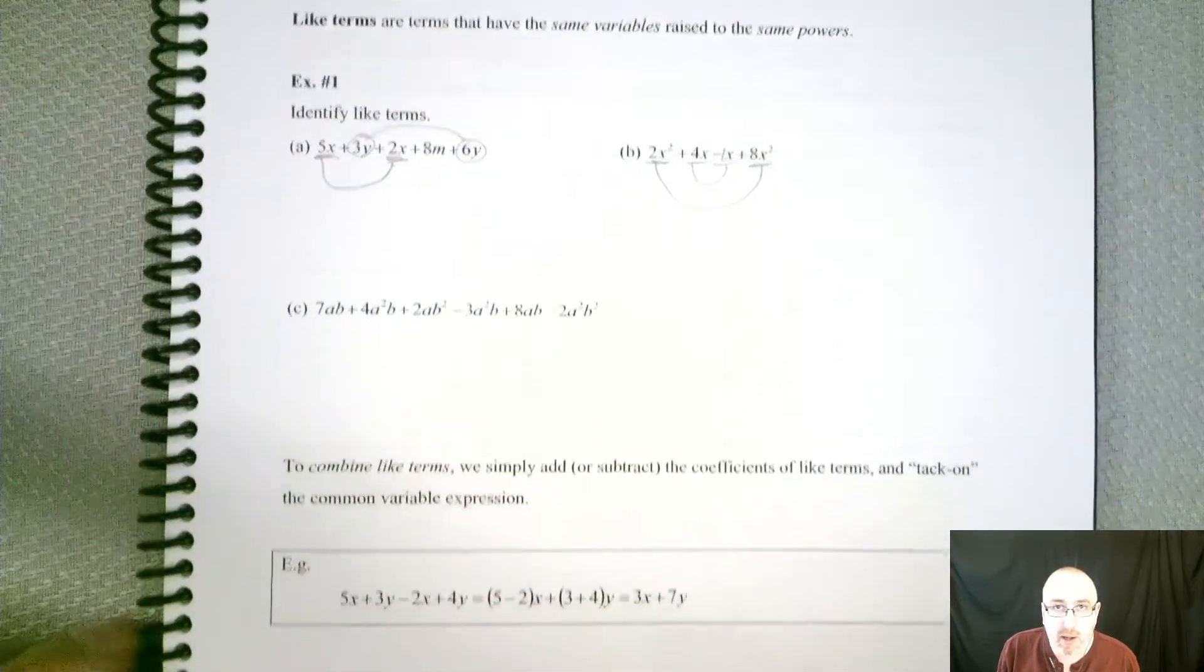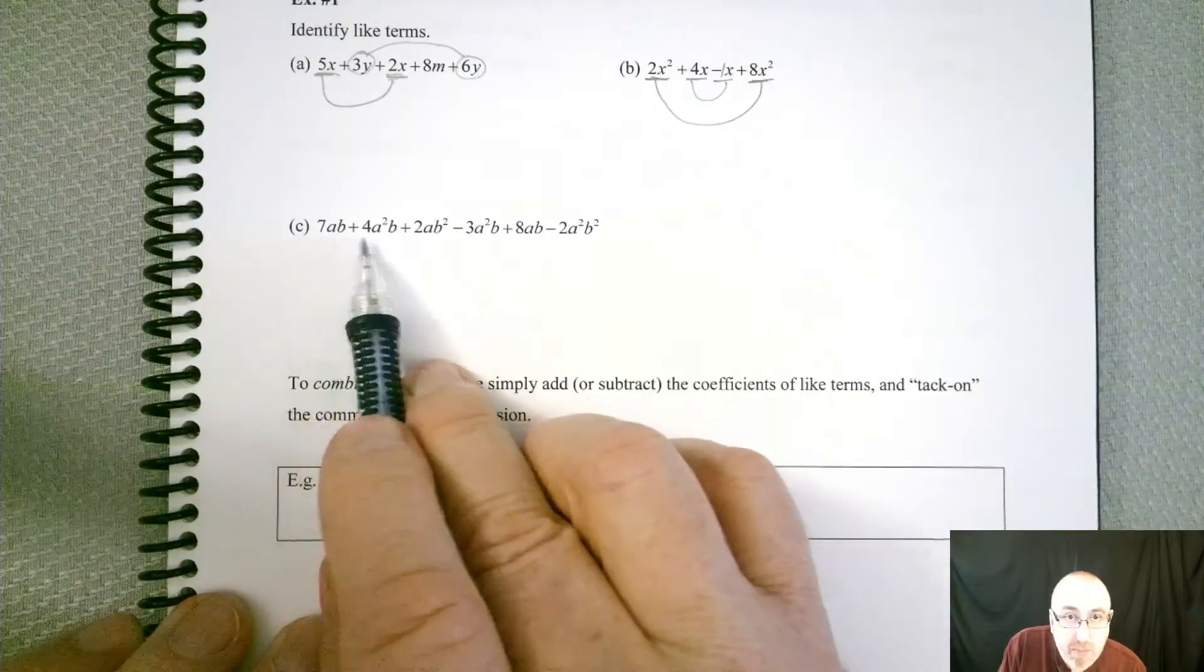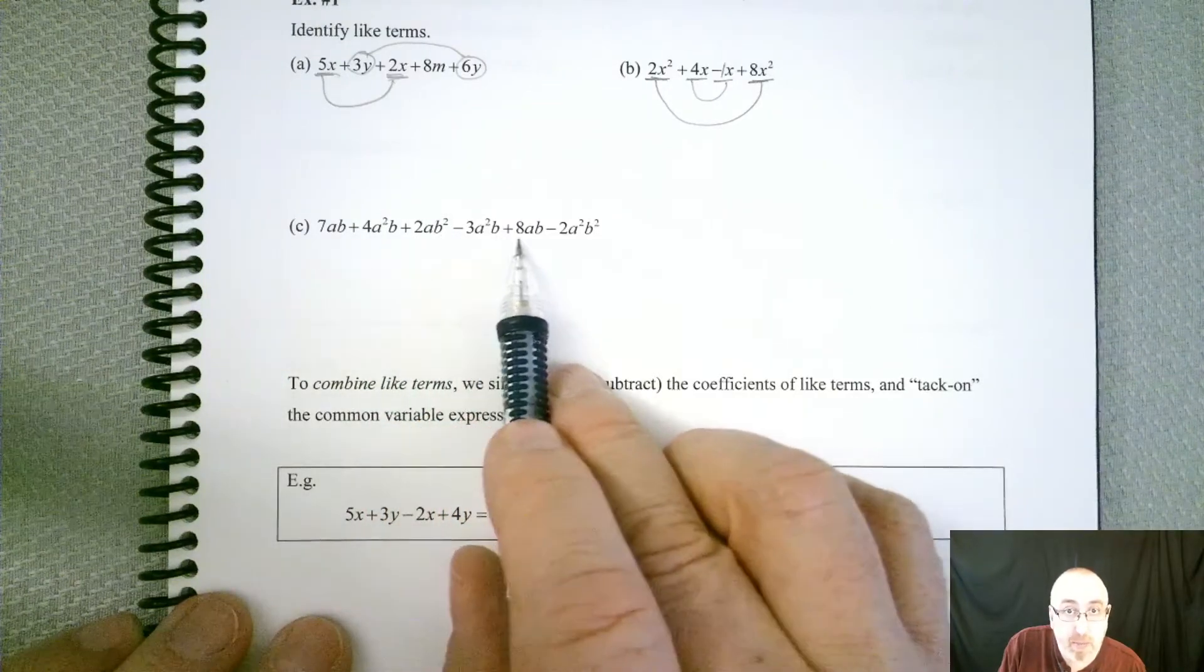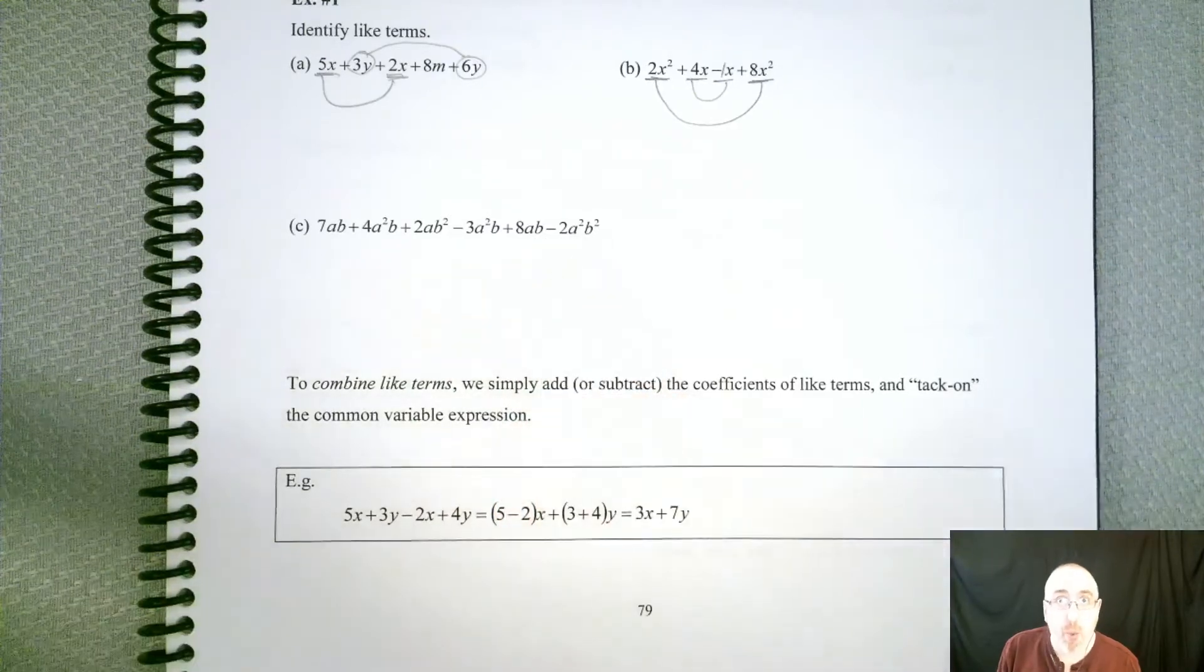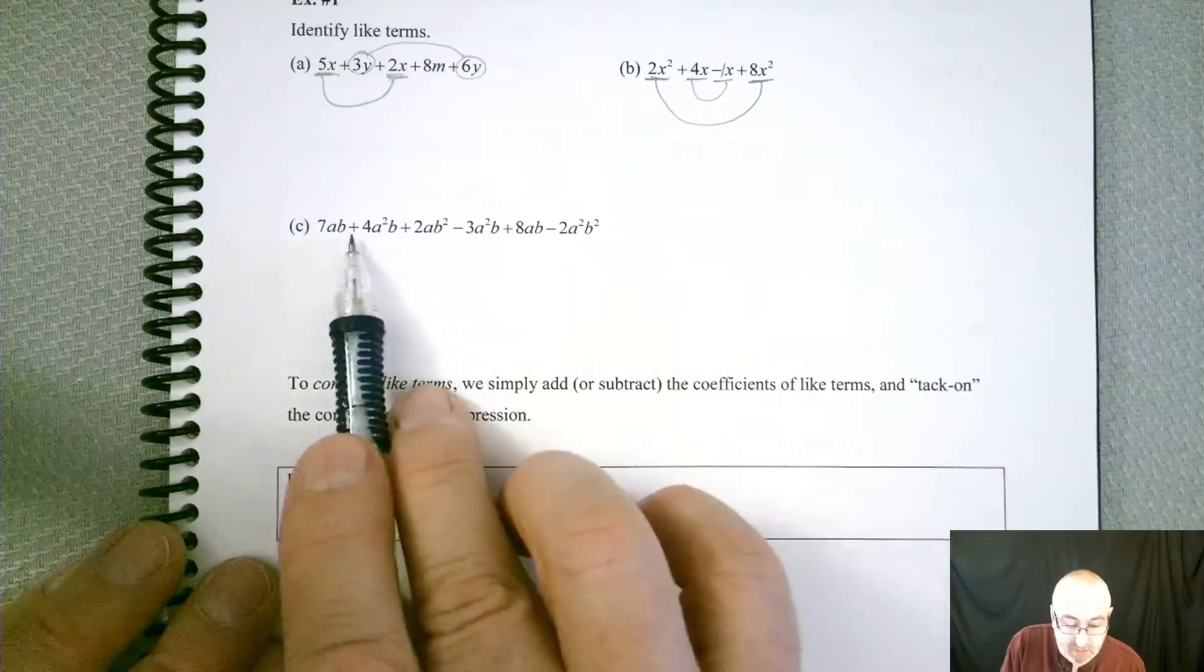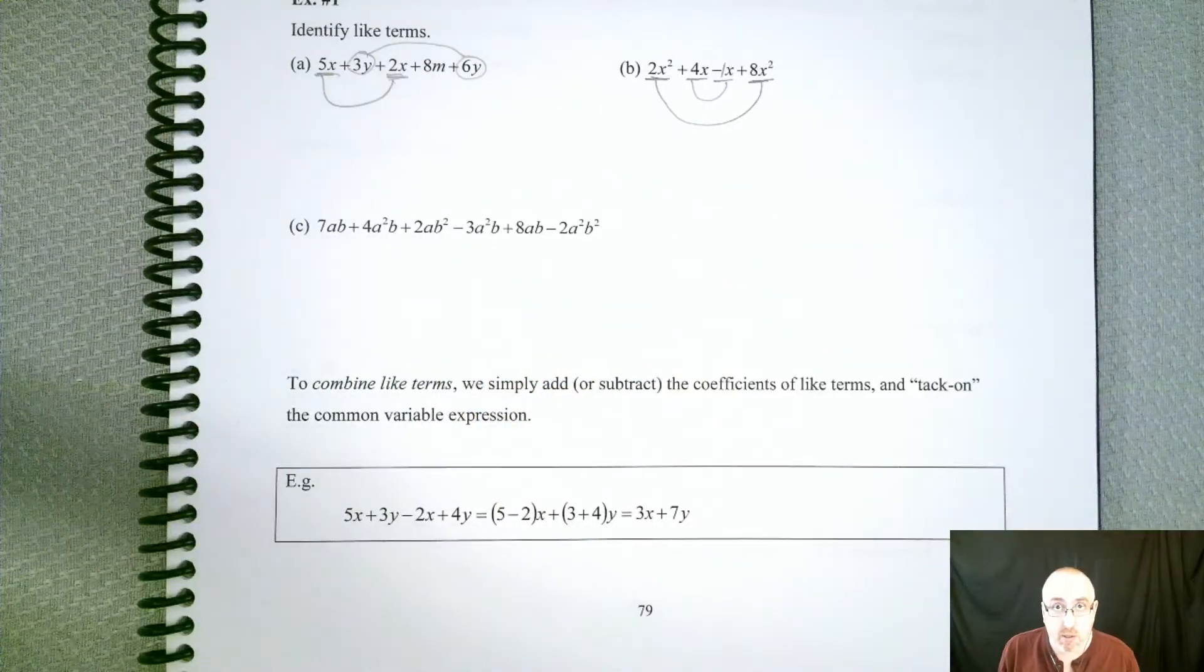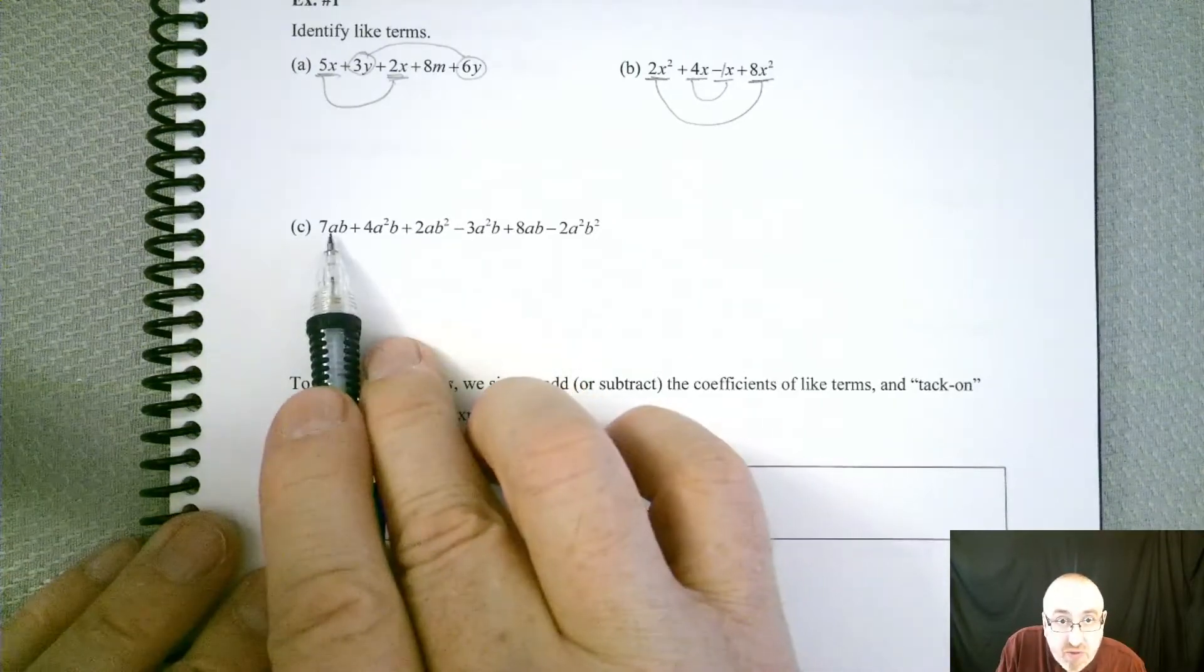All right, so those were a couple warm-ups. Let's take a look at a really nasty one. So 7ab plus 4a to the second b plus 2ab to the second minus 3a to the second b plus 8ab minus 2a to the second b to the second. All right, so a lot of terms in here. But basically, remember, everything is separated by additions and subtractions.